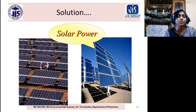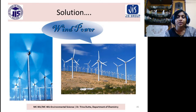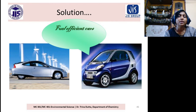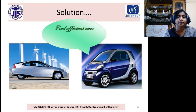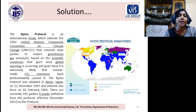We can use alternate energy resources like solar power and wind power. We can also innovate and use fuel-efficient cars so less fuel is consumed. The Kyoto Protocol is a treaty where all countries came together and agreed to reduce greenhouse gas emissions, effective from December 2012.